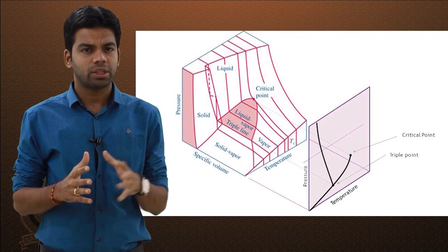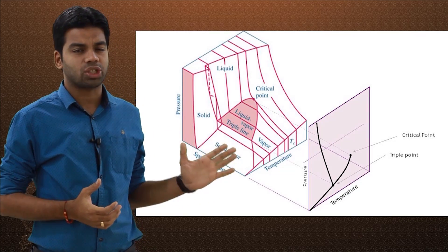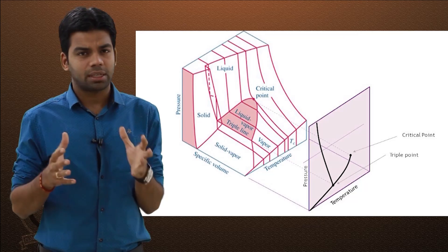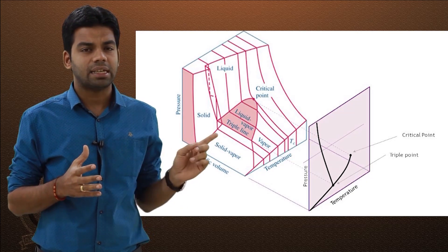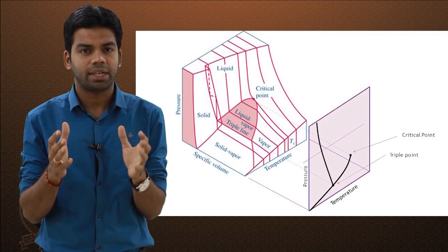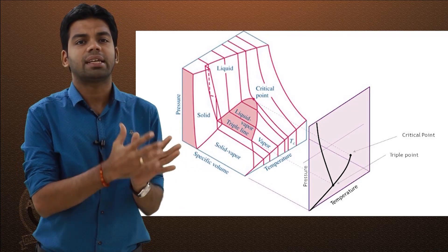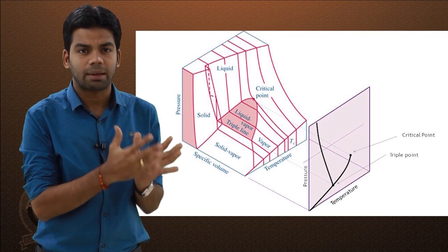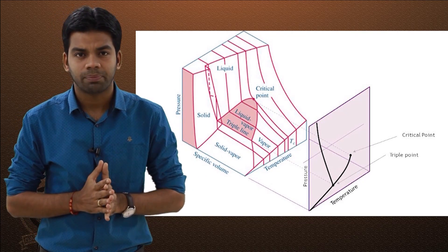In a 3D pressure-volume-temperature diagram, the triple point state is actually an entire line in the PV diagram, not a single point. But when projected onto the PT coordinate system — the pressure-temperature plane — that line becomes a single point.